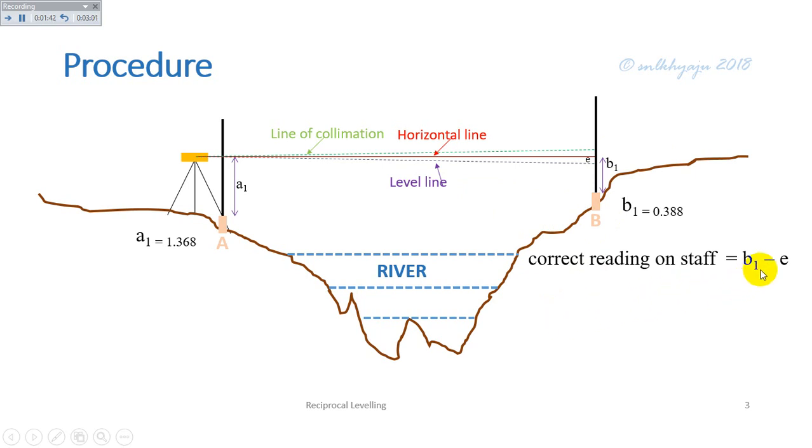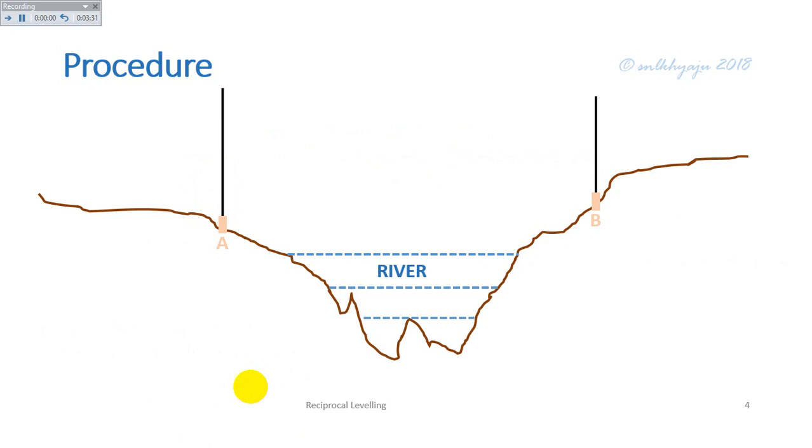The true difference of level between A and B, that is h, equals a1 minus (b1 minus e). Therefore h equals a1 minus b1 plus e. Similarly, for the second case, the level is placed near to point B.